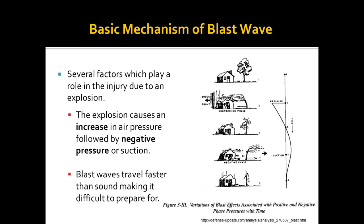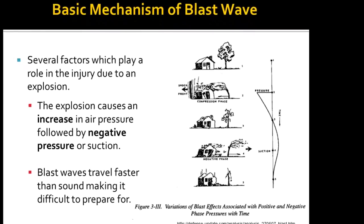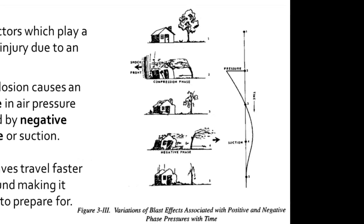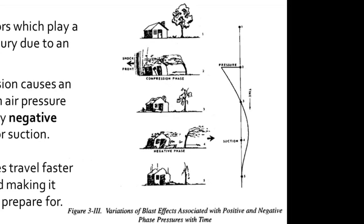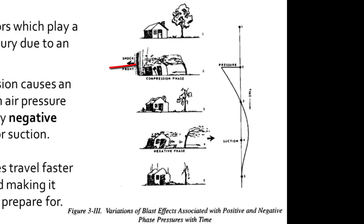The blast waves also travel faster than sound, making it difficult to prepare for. This diagram depicts the change in pressure after a blast force or after an explosion. On the right hand side of the figure you see a line that represents time, and then you see the pressure as it increases at time of detonation, causing the house and the tree in this picture to actually be pushed away from the explosion.